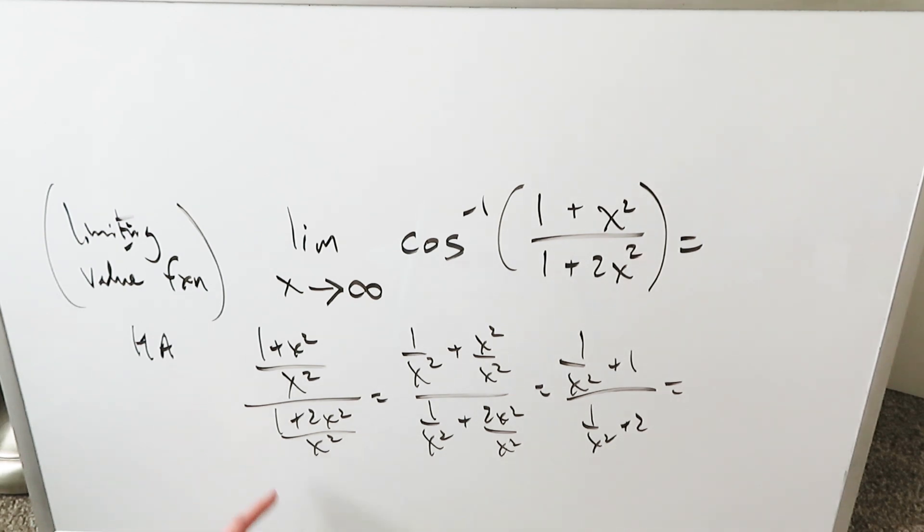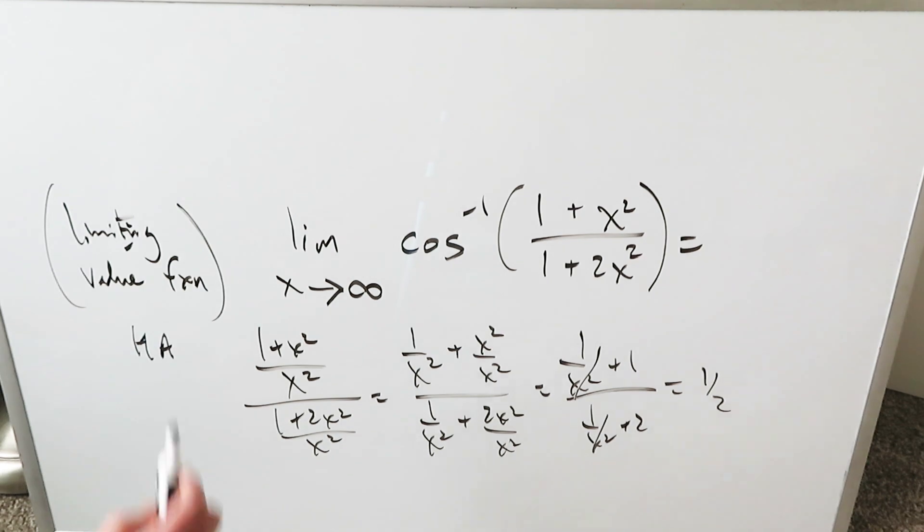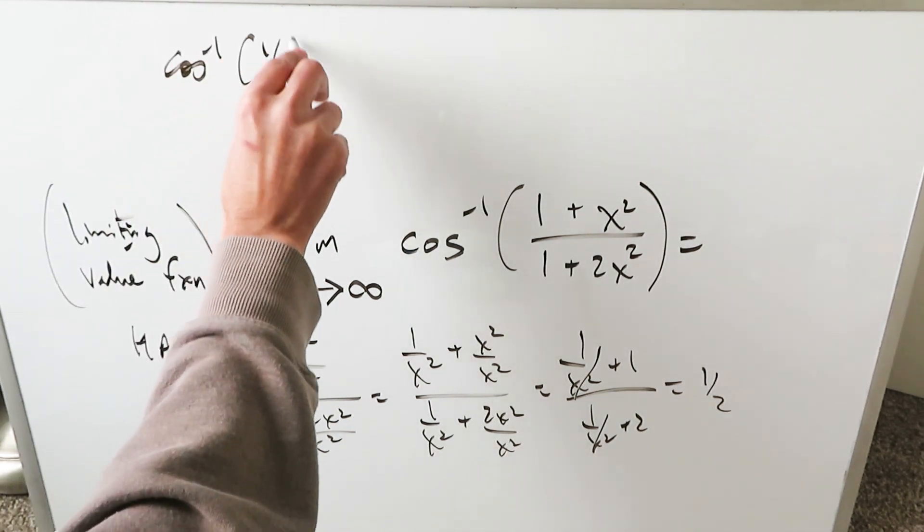Limit as x approaches infinity, these zero out, and you get 1 over 2. Essentially, now what you're doing is just an inverse cosine of 1 over 2.